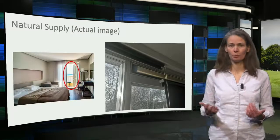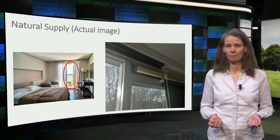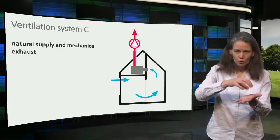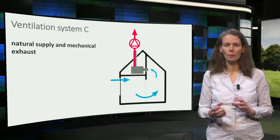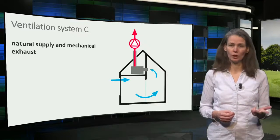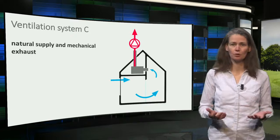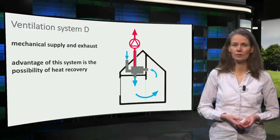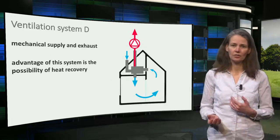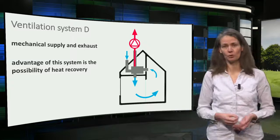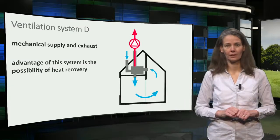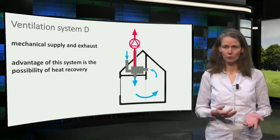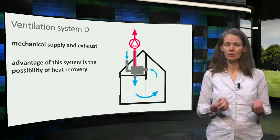The actual supply systems are given in this image. The air that is supplied to the room must also leave the room and preferably directly at the source of the pollutants. In the Netherlands, a mechanical exhaust is prescribed in kitchen, bathroom, and toilet for dwellings. A natural supply and mechanical exhaust system is called system C. A more advanced system is system D, which controls both the supply and exhaust amount of air and is therefore a balanced system. Another advantage of system D is the possibility of heat recovery, which will be discussed next week in the reuse step.